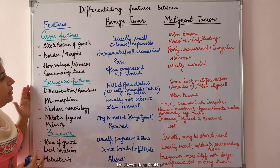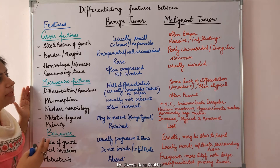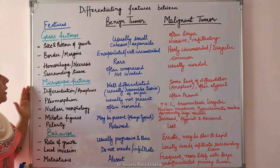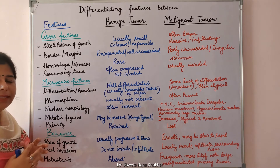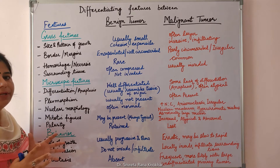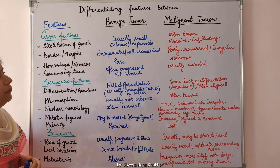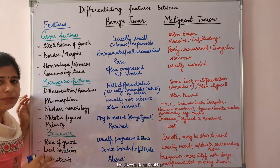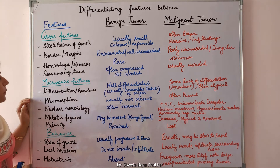Hemorrhage and necrosis is rare in benign tumors, whereas it is common in malignant tumors. Regarding surrounding tissue, it is often compressed and not invaded by the benign tumor, whereas the surrounding tissue is usually invaded by malignant tumor.